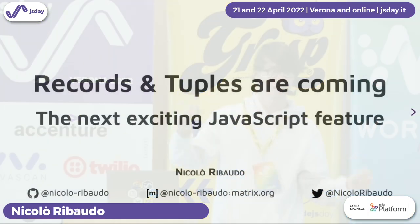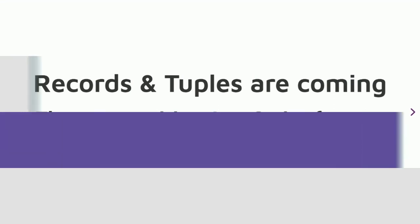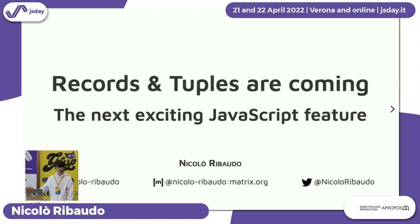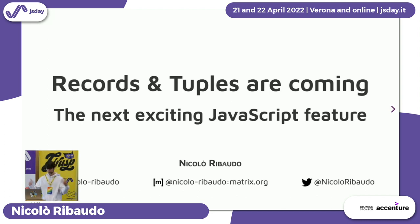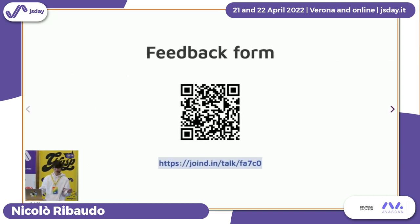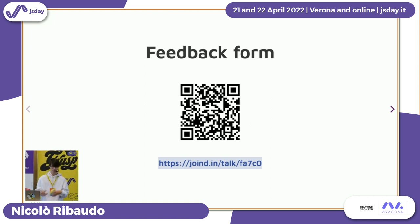Today I'm going to talk to you about Records and Tuples. It's a new proposal for JavaScript whose goal is to bring immutable data structures as natively supported in the language. If you have any questions or want to reach out, you can find me on Matrix or on Twitter. You can also use this link or QR code to give feedback about the talk and help me make it better.